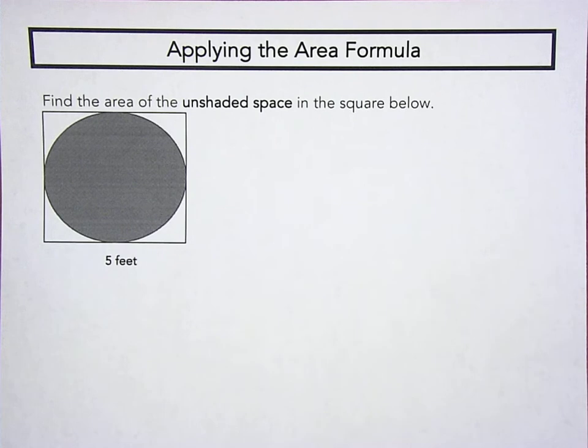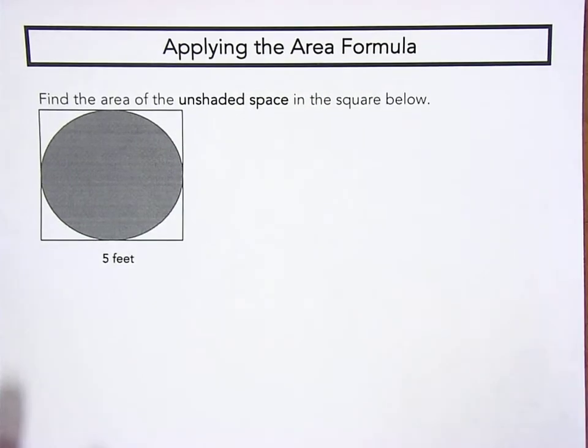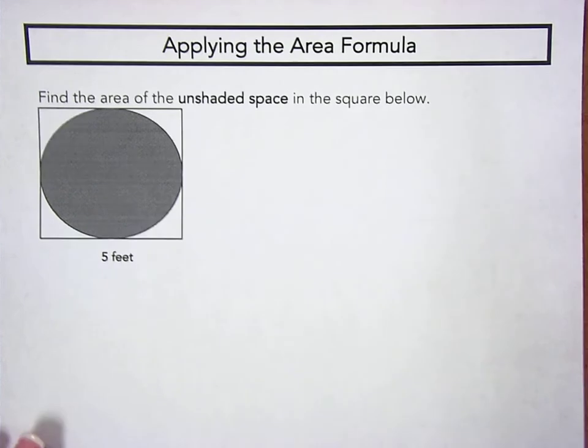Hey guys, it's Ms. DeLitto. This video was a special request to go over how we apply the area formula to find the area of any unshaded or shaded spaces, specifically when we have shapes where we've got a square and a circle in the middle. Let's talk about this.